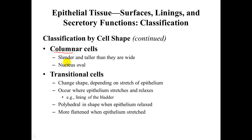Columnar cells appear like a column — slender and taller than they are wide, with an often oval nucleus. Lastly, transitional cells transition in shape depending on the stretch or pressure applied to the epithelial. You see these a lot in the bladder or ureters so that the epithelial can stretch as they expand. They are polyhedral in shape when relaxed; however, when stretched, they are much more flattened and often hard to tell apart from stratified squamous cells.